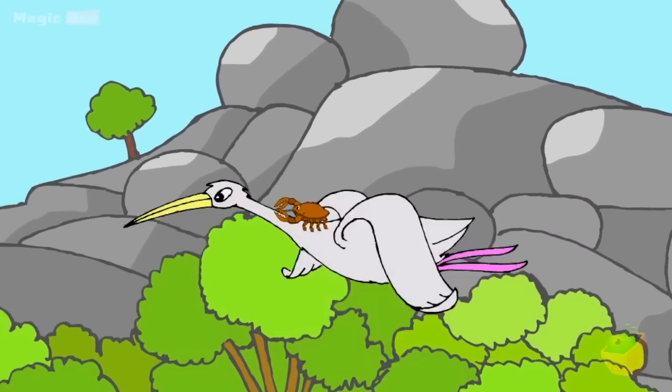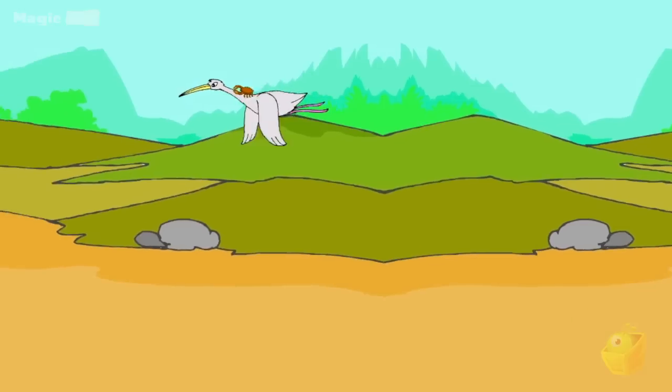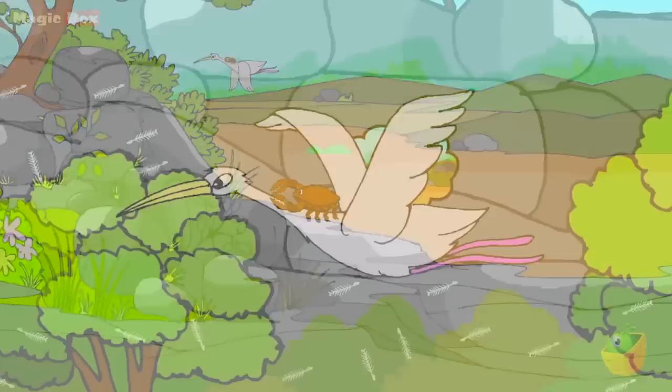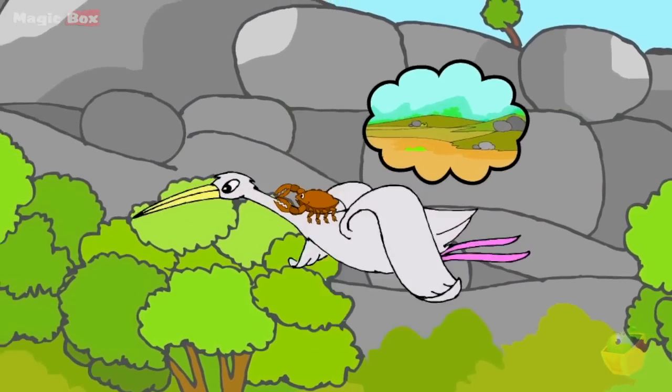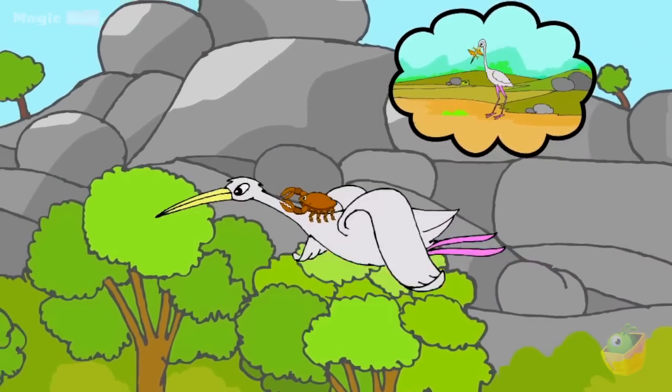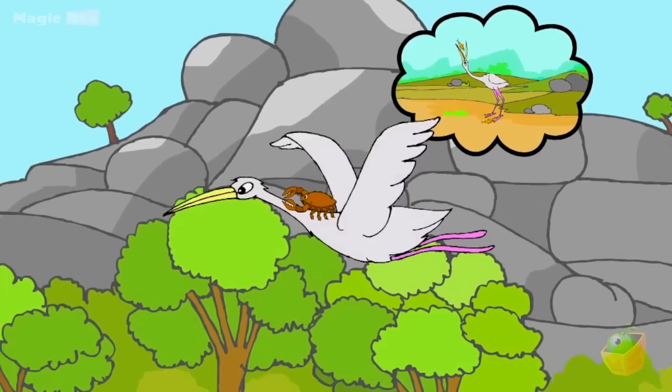The crab saw fish bones on the rock while travelling on the crane's back. It got shocked. You cheater! Crane! I've lost so many of my fish friends by believing you. You're going to eat me also like this.